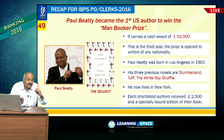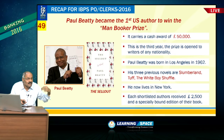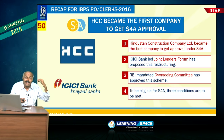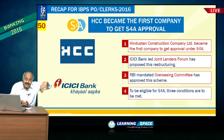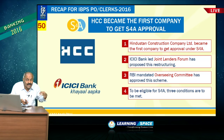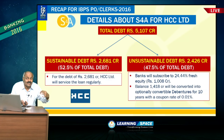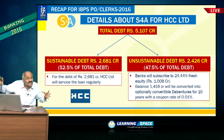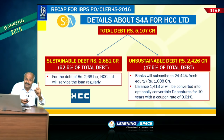HCC — Hindustan Construction Company Limited — became the first company to get approval under S4A. The joint lenders forum was headed by ICICI Bank and approved by the overseeing committee nominated by RBI. Under S4A, total debt is bifurcated into sustainable and unsustainable debt. Sustainable debt must be a minimum of 50%. HCC is the first company to receive this approval.